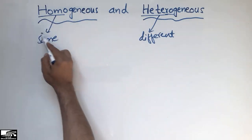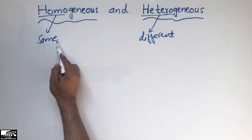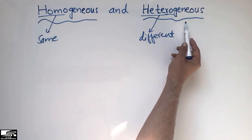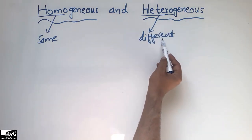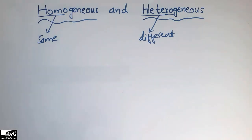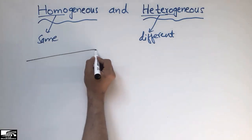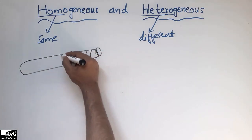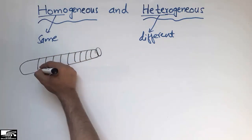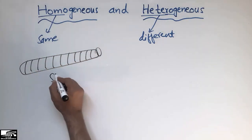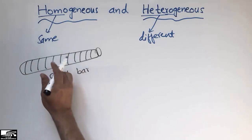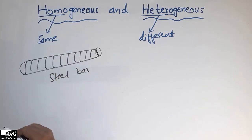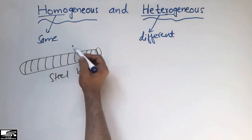Homogeneous materials are those which have uniform composition — the same uniform composition throughout. For example, consider a steel bar. The steel bar has the same appearance and composition throughout, so we call it a homogeneous material because its composition is the same throughout.